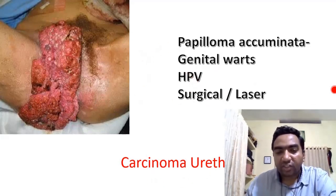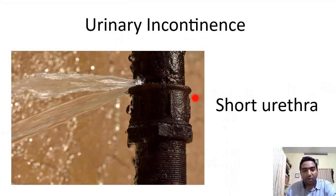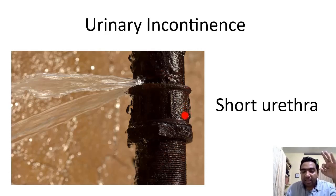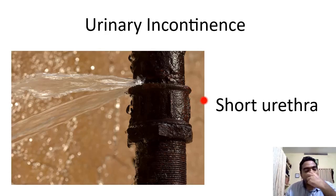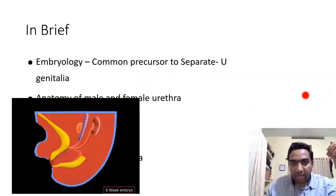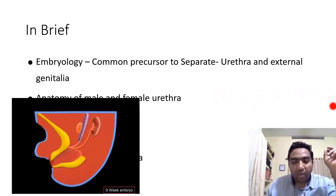Urinary incontinence is more common in females: the female urethra is short, there is a risk of birth trauma, and there is only the external sphincter — no bladder neck control mechanism as in males. So there is a greater chance for urinary incontinence in females.